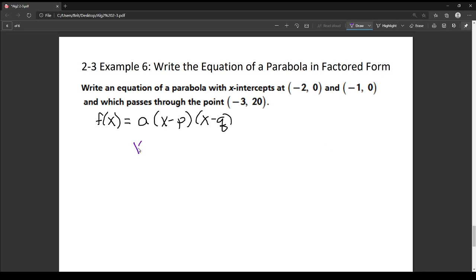So I have an x-intercept at negative 2 and I have an x-intercept at negative 1. So I'm going to turn this into a factor by setting it equal to 0. So I need to add the 2 back to that side, so I have x plus 2 equals 0. And here I need to add the 1 to the other side, so I have x plus 1 equals 0.